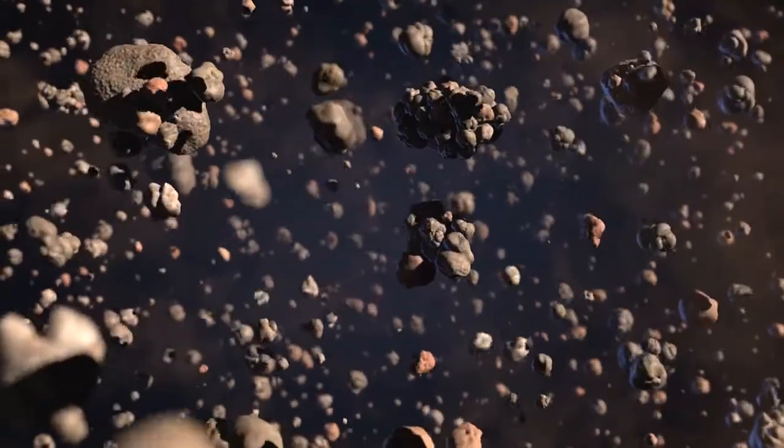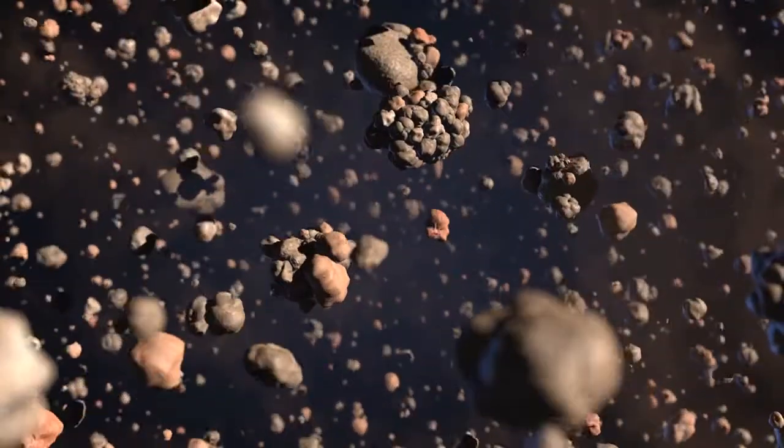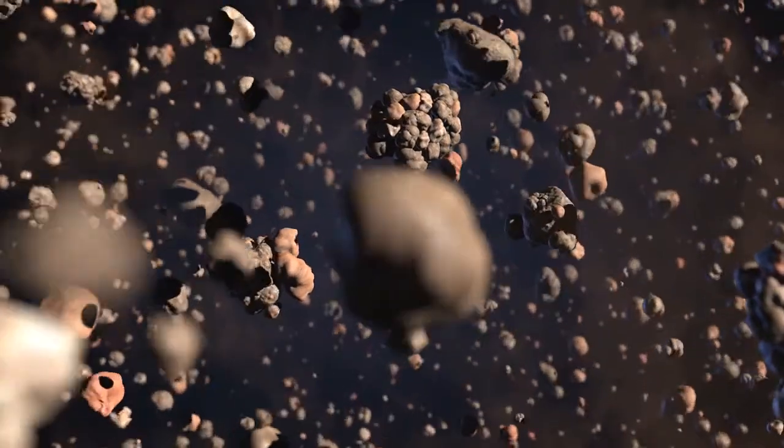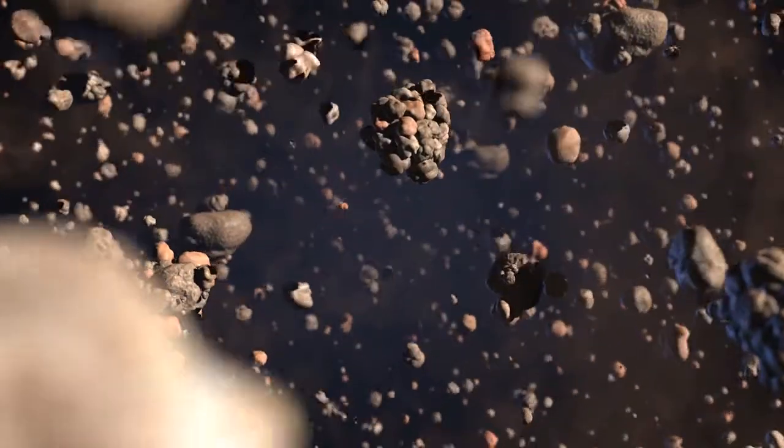Computer models suggest that dust grains grow by colliding and sticking together. However, when the bigger grains collide again at high speed, they are often smashed to pieces and sent back to square one.